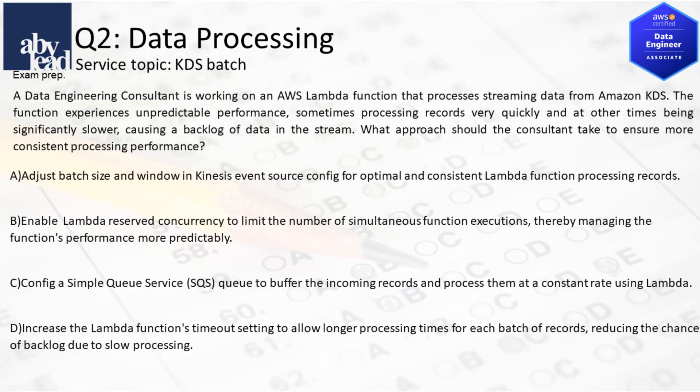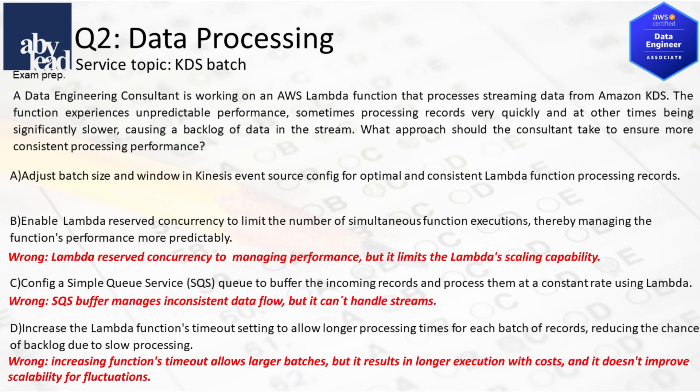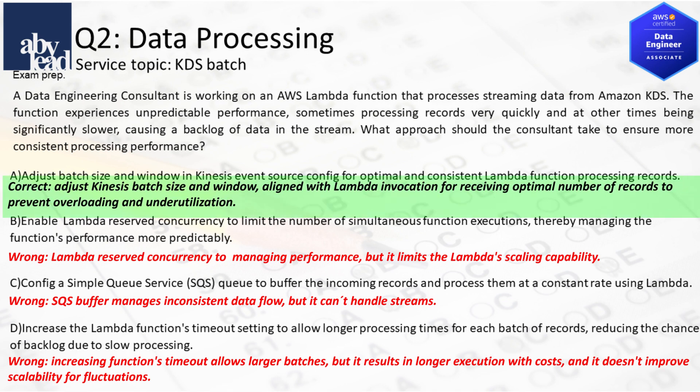Question 2: How do you consistently process Kinesis streams with Lambda when unpredictable performance causes backlogs? Lambda reserved concurrency limits its scaling capability, and an SQS buffer can't handle streams. Increased function timeout results in longer execution with costs without improved scalability. For consistent performance, adjust Kinesis batch size and window to align records to Lambda.